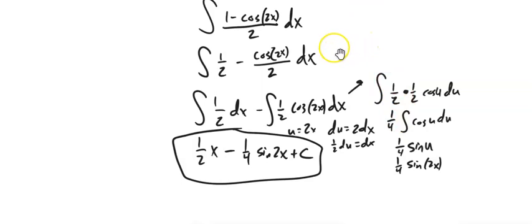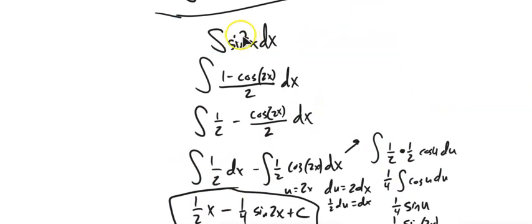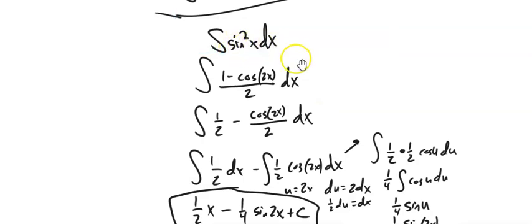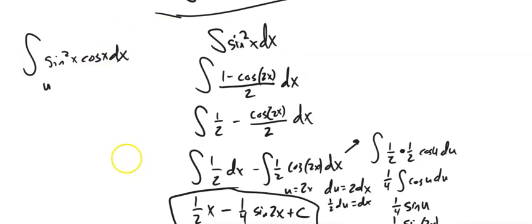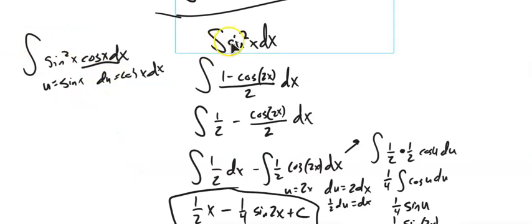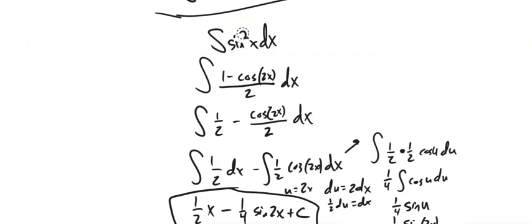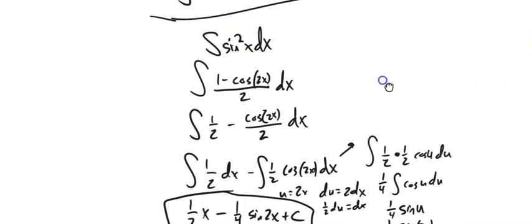Notice in these even-power cases, we're handling the fact that we have an even-powered trig function without the other one to fill in the du. This is a different situation than having sine squared times cosine squared, where I could do substitution straight away with u equals sine and du equals cos x dx. Here I don't have that cosine, and since the power isn't odd, I can't pull out a singleton.